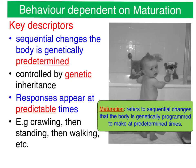Finally, maturation refers to sequential changes that the body is genetically programmed to make at predetermined times — for example, a child will start crawling at about the five- to six-month mark, start standing at about nine to ten months, and start walking at about a year — or in the case of my four kids, at about 16 months. A key point with maturation is you can't accelerate the process. You could try to train a young child at about nine months to walk by doing various exercises, but until that child is genetically ready — i.e. they've got the balance, the will, the motor control — they will not be able to walk. It's a genetic process and it doesn't require prior experience.